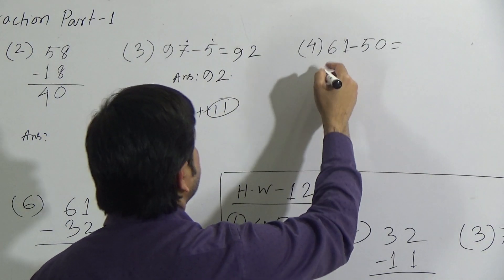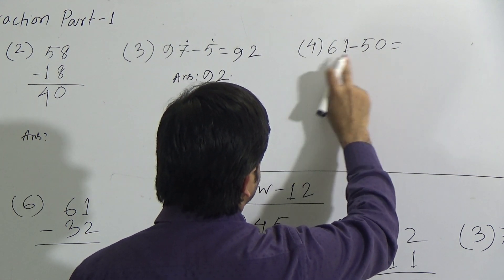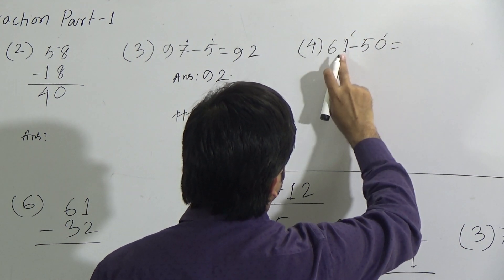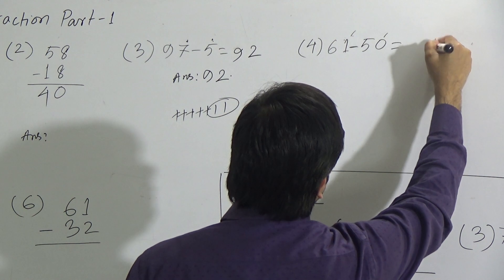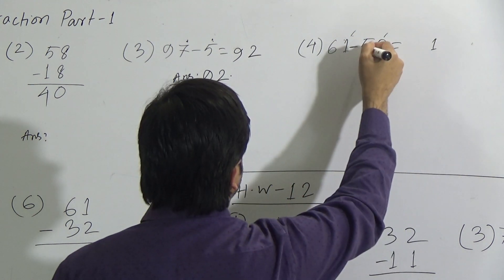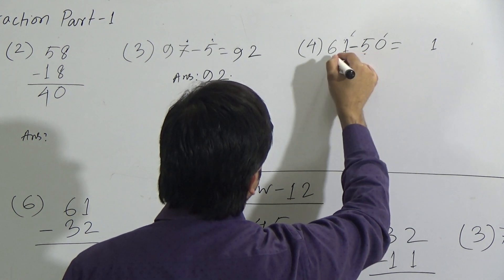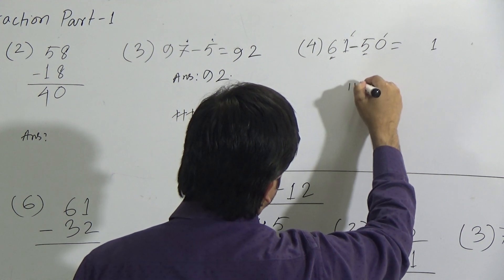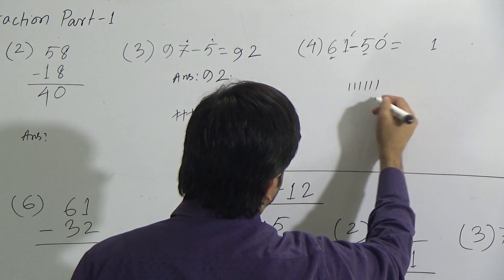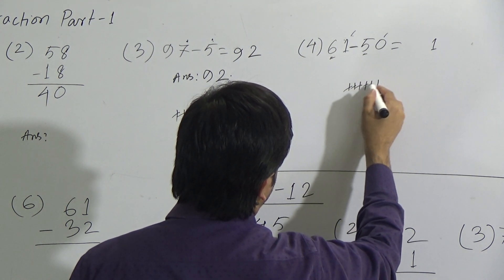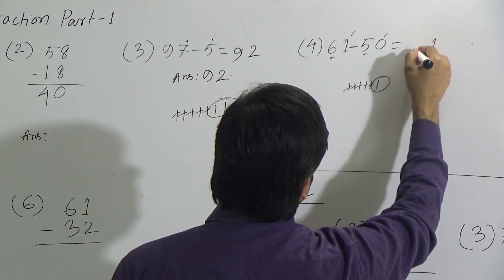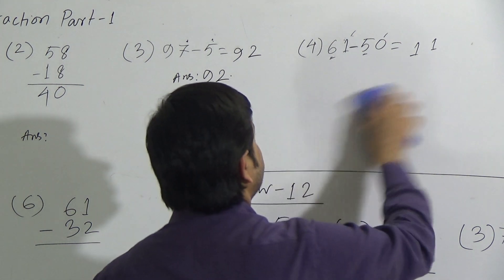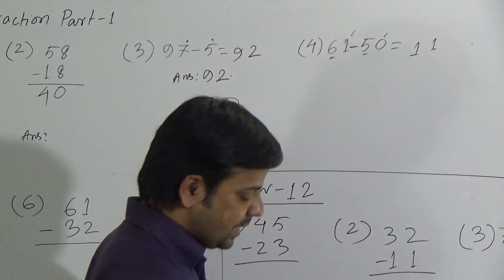Now question 4: subtract 50 from 61. Starting from the unit place, subtract 0 from 1, we get 1. Now the tens place: subtract 5 from 6. Count 6 sticks: 1, 2, 3, 4, 5, 6. Cut 5: 1, 2, 3, 4, 5. One stick remains. So the answer to question 4 is 11.